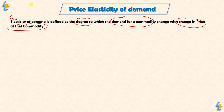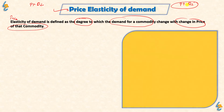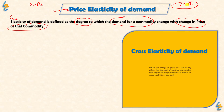In Price Elasticity of Demand, if a commodity's price has changed, then what is the change in the quantity demanded of that commodity? There is also a special case where we check: if we change the price of one commodity, then what is the change in demand for another commodity? This is called Cross Elasticity of Demand.